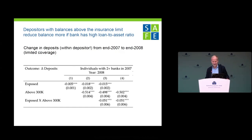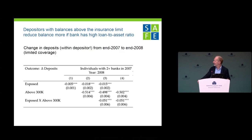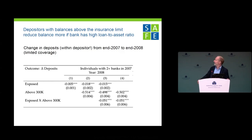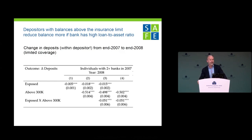Dominic did a great job summarizing, so I'll do something different and won't talk much about the various results — there are loads of results and I can't do them justice in a short discussion. Here is the one benchmark result: individual depositors with balances above the insurance limit reduce that balance relatively more if their bank has a high loan-to-deposit ratio — that's the core of the first result when the crisis hits. What makes this paper amazing is the data: they can observe your account holdings at every year-end.